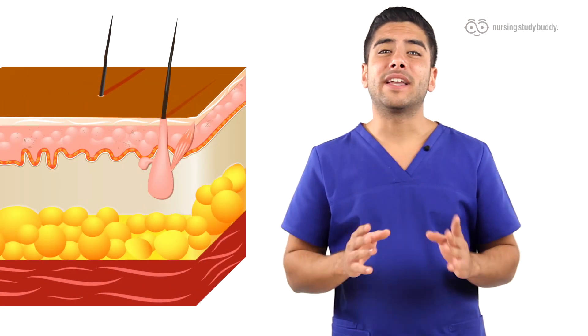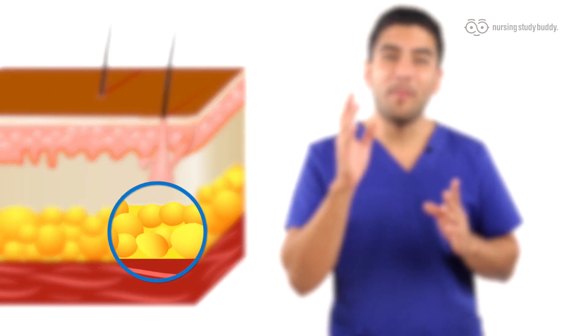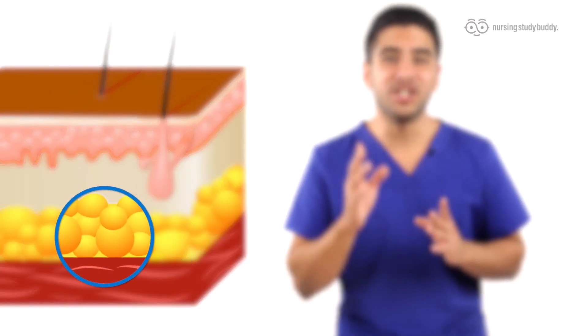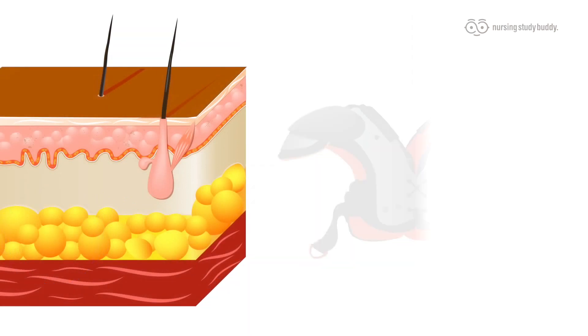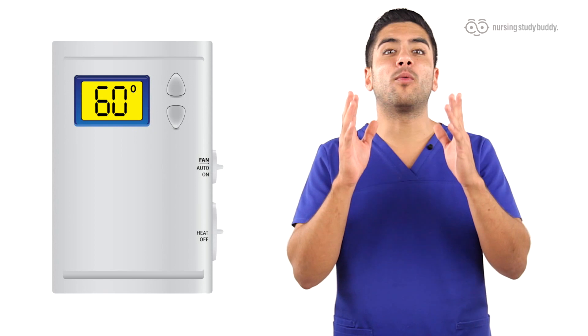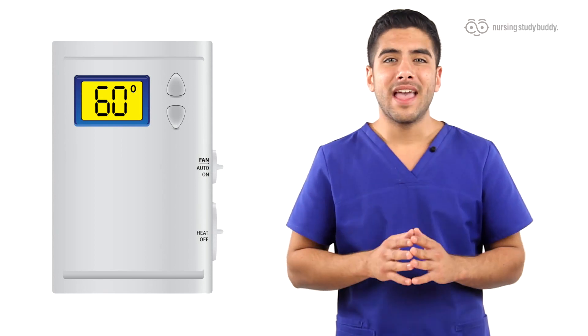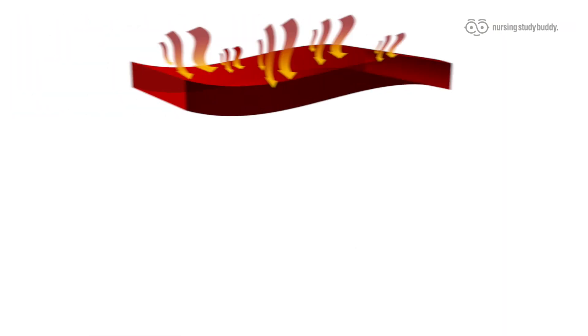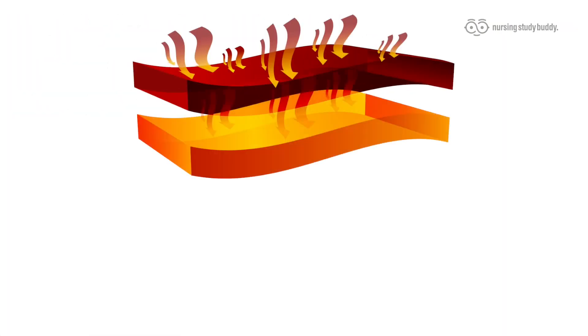Due to the subcutaneous being composed of so much adipose tissue, it also functions as padding, protecting our organs from trauma, as well as contributing to thermal regulation — because it acts as insulation.